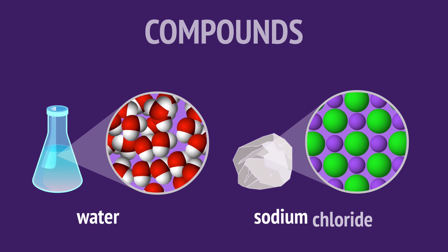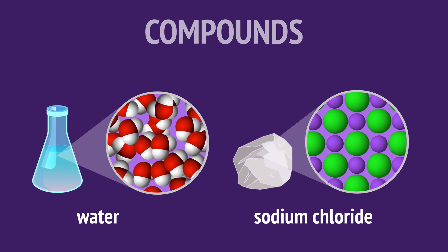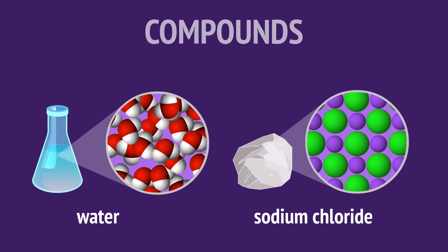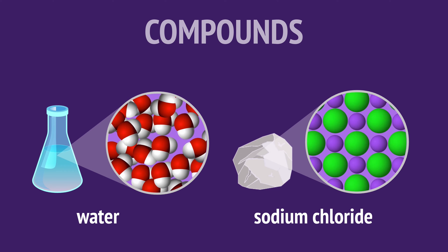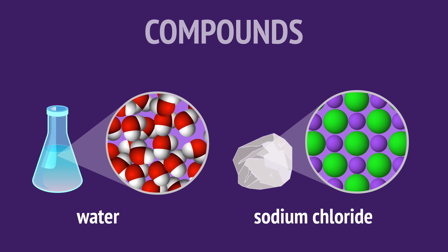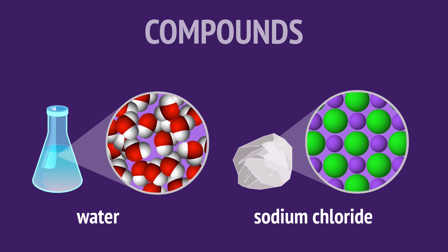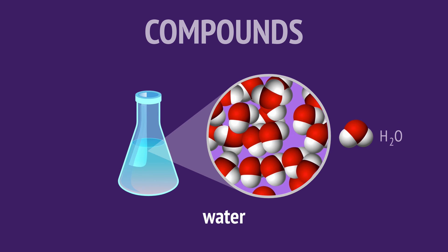Compounds contain two or more elements that have chemically combined in fixed ratios. All compounds are pure substances because they only have one type of molecule or one formula unit. The compound water has only water molecules,